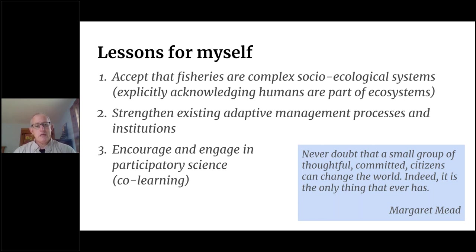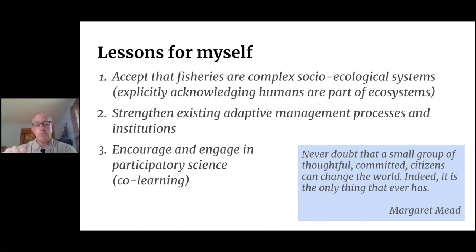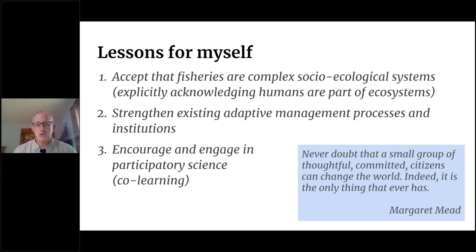Lesson number three is to really encourage and engage in participatory science. We've talked about stakeholders having different views of a problem, science being one perspective of many, and stakeholders being in the decision-making part of the fisheries management process. What we need to do as scientists is take that participatory management mantra and think about what participatory science would look like. There's a lot of literature on the value of co-production of knowledge — working as scientists with other stakeholders to co-produce knowledge to be used in solving the problems we are trying to address.